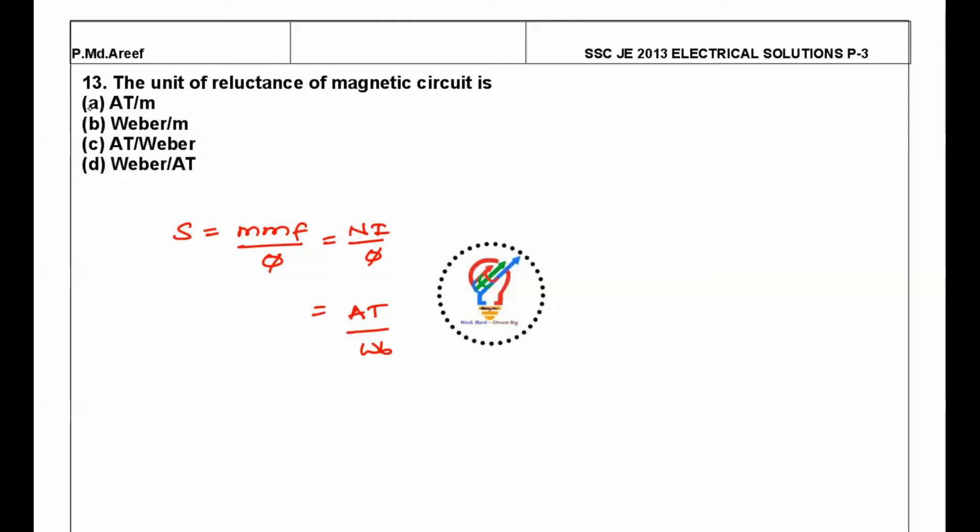So ampere-turns per weber is the answer for this question. This is similar to, if you compare electrical analogy, resistance is nothing but voltage by current.